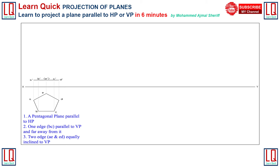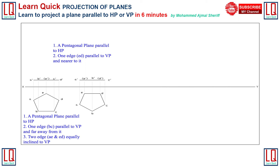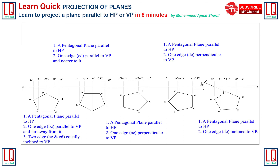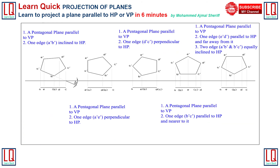In the front view we obtain a straight line with corners A, B, C, D visible and corner E invisible. Similarly, for the plane parallel to the horizontal plane, when the edge is parallel to VP and nearer to it, when the edge is perpendicular to VP, and when the edge is inclined to VP, we obtain the shown front view and top view.